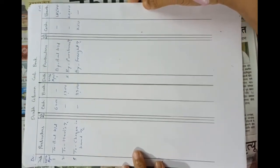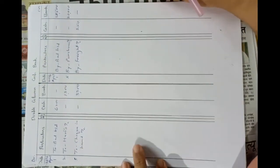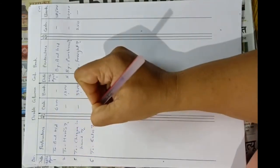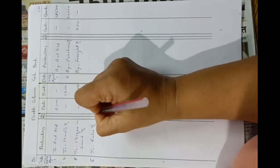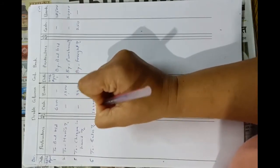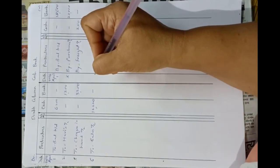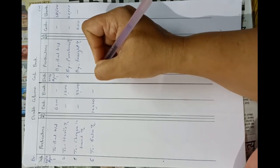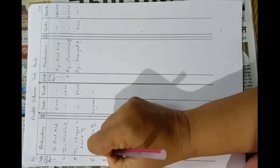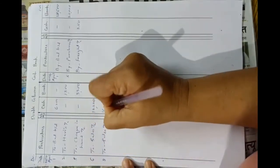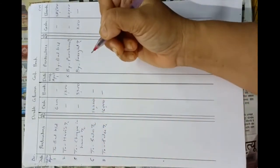On 6th April, sold goods for cash Rs. 12,000 — entry on receipt side, to sales account, amount in cash column. On 8th April, sold goods for cash Rs. 16,000 — to sales account, Rs. 16,000 in cash column, dash in bank column.